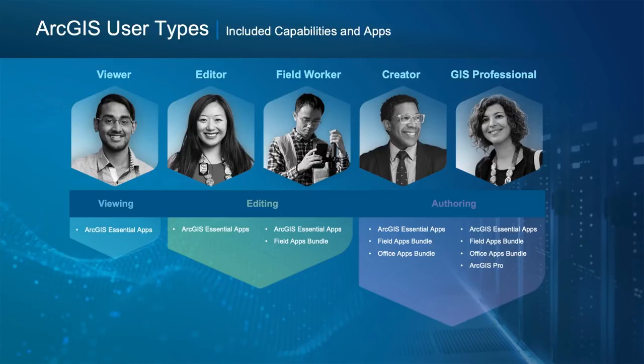Let's take a look at each user type. The first two you already have and are really familiar with. A Creator can create maps and apps, share maps with your team or the public, collaborate with team members, and administrate users and content. A Viewer can view your team's private maps and applications that are shared with them. Both of these should sound really familiar since they're already part of your subscription. After December, there'll be three additional user types available: an Editor, a Field Worker, and a GIS Professional.